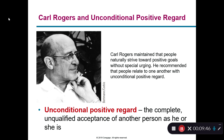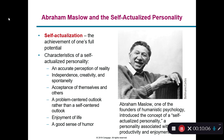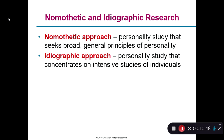Carl Rogers introduces unconditional positive regard — the idea that all of us want a positive impression of ourselves and want to be happy. How do we help people achieve these positive goals and fulfill what they were meant to do with their life? Abraham Maslow coins self-actualization: once our basic security and attachment needs are met, we focus on fulfilling our potential and living the best life we can. Beyond that, he talks about self-transcendence — finding meaning once you've fulfilled all of your potential in life.